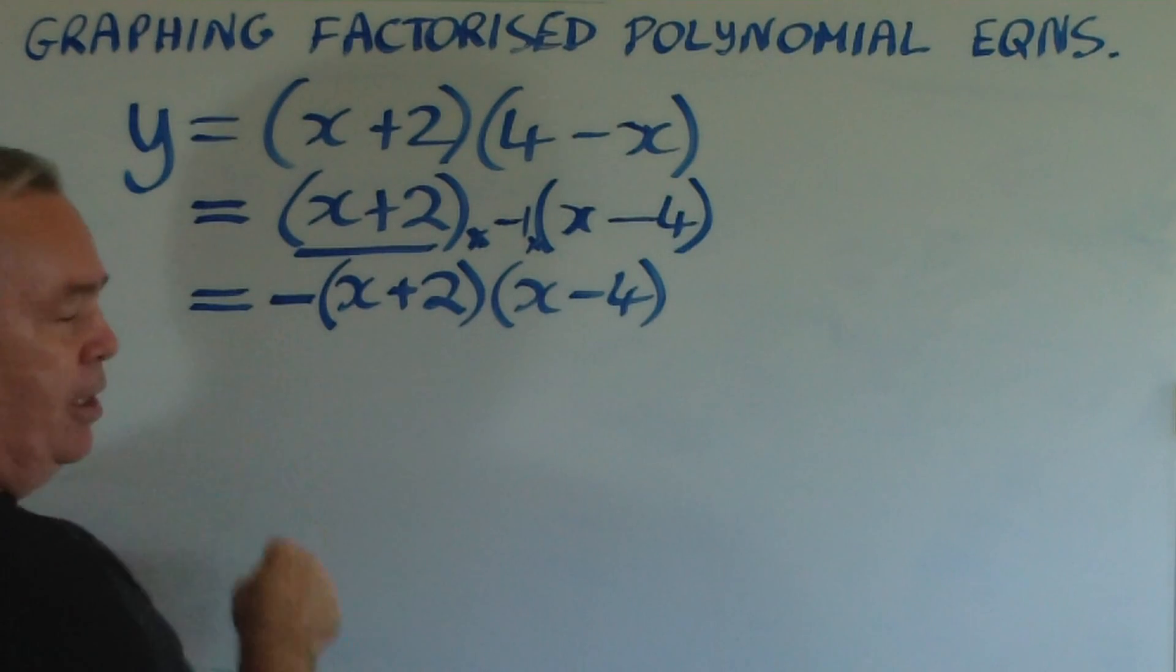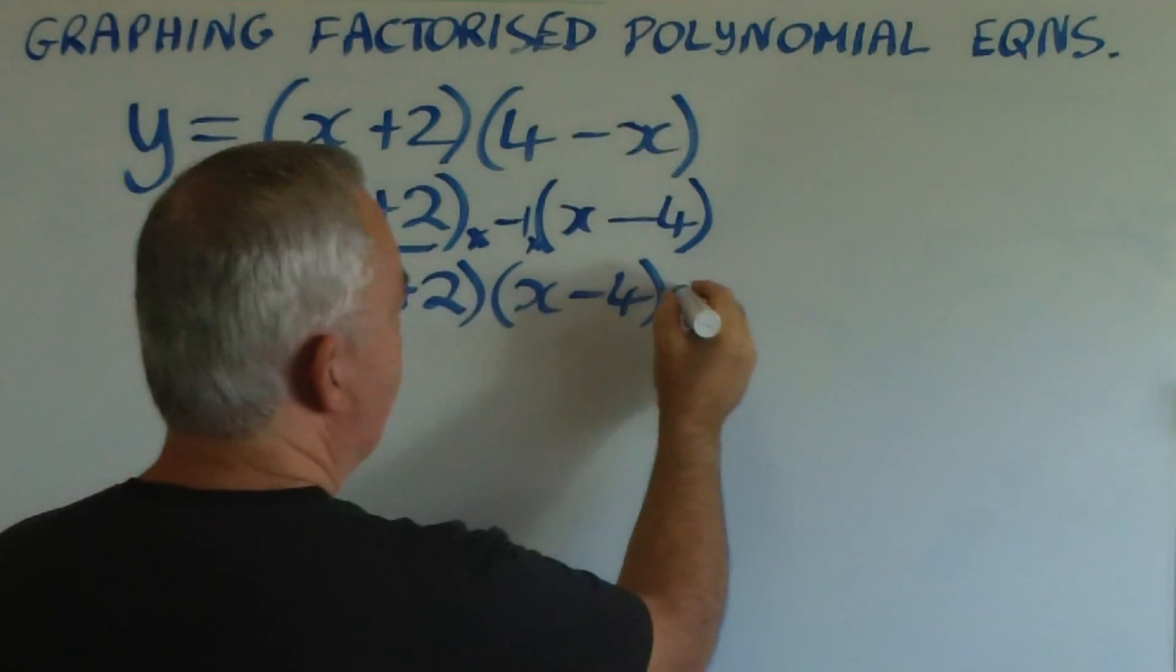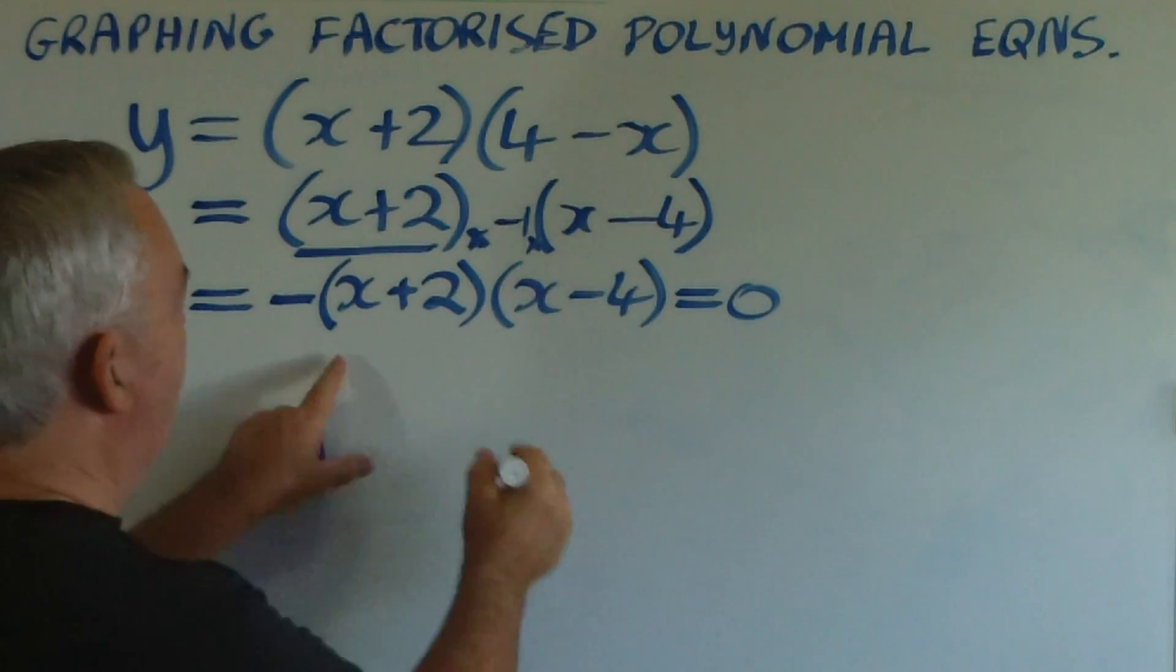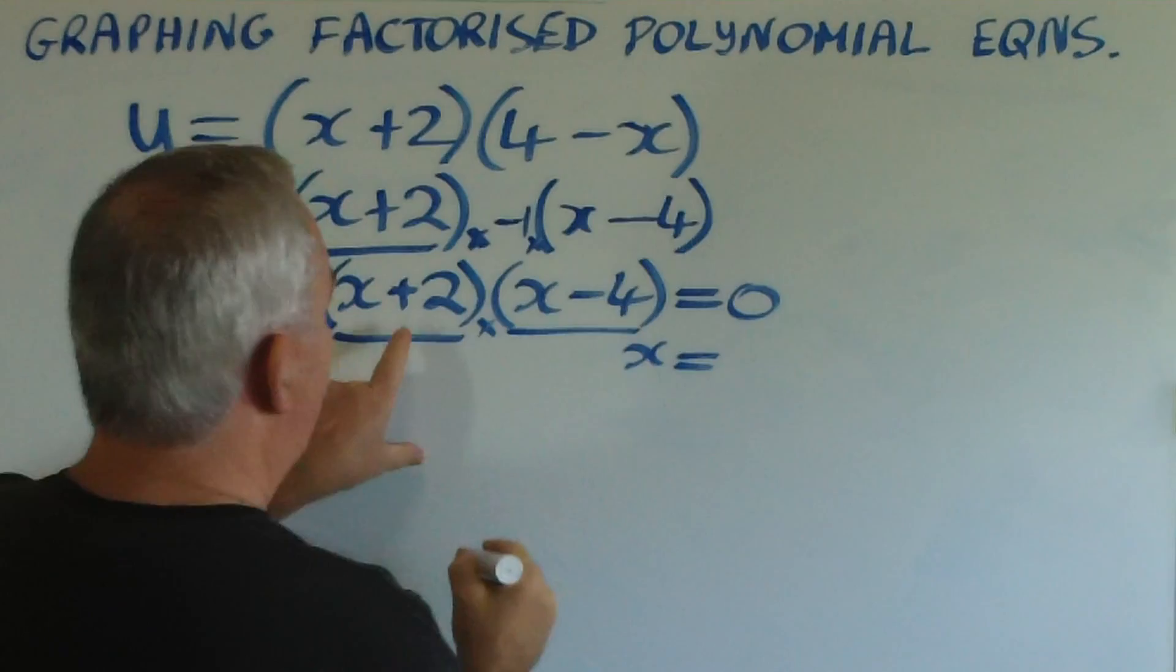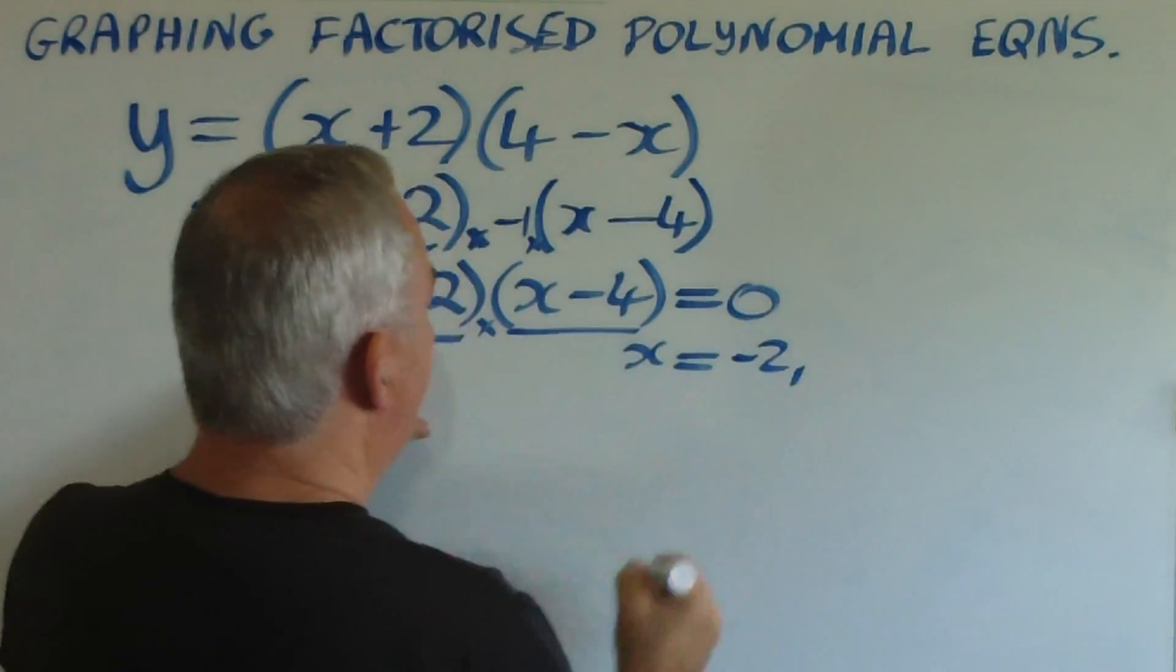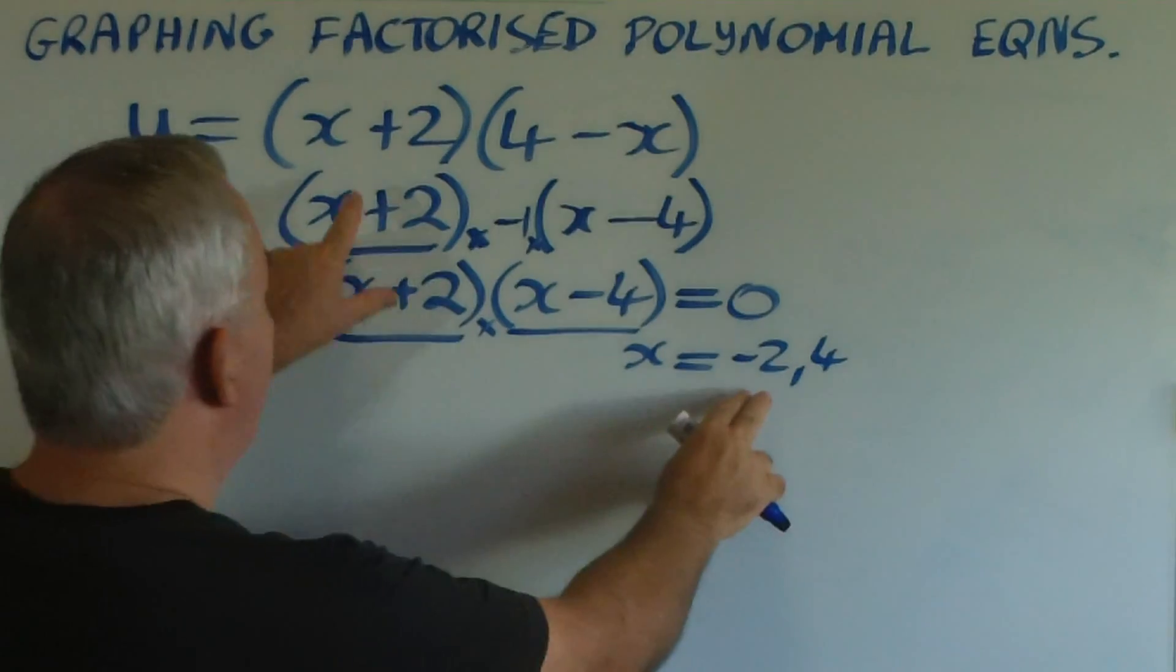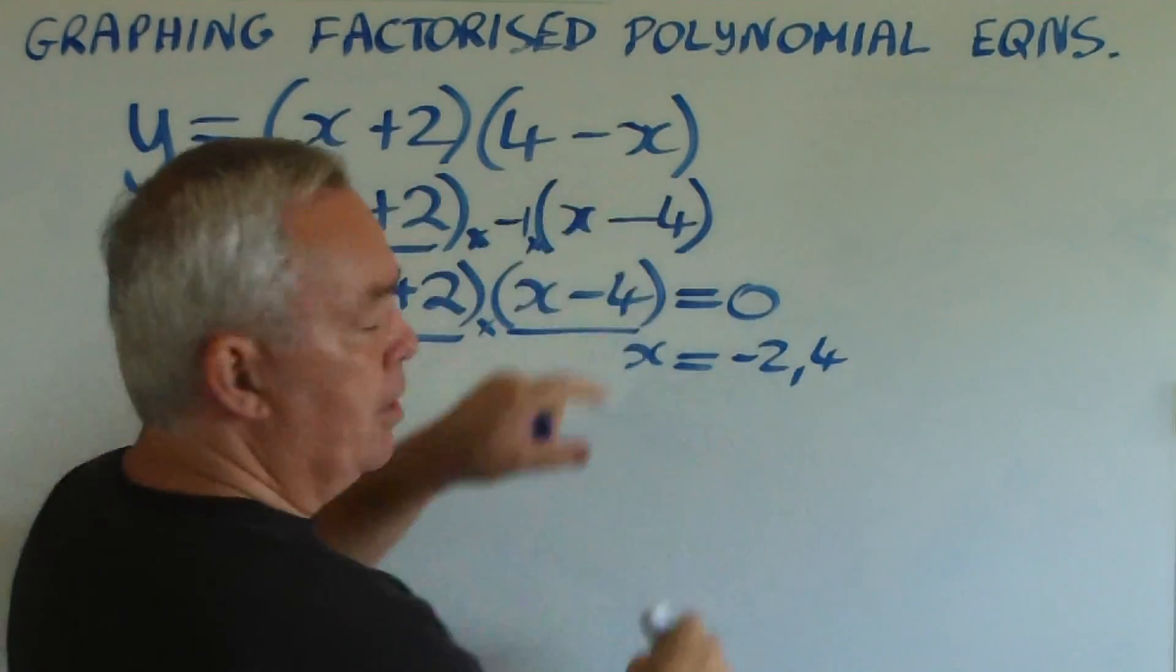It's this minus sign that I want to talk about in terms of graphing. But first, let's find the roots of this equation. We set y equal to zero to find the roots. The roots must be when this factor is zero, at x equals negative 2, and when this factor is zero, when x is 4. You could have seen that back here and even here, when 4-4 makes zero.